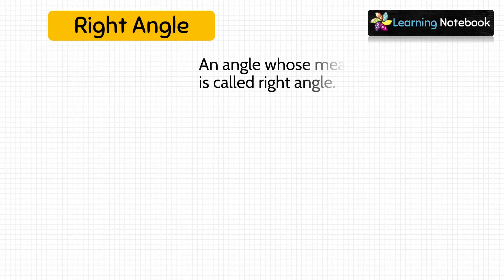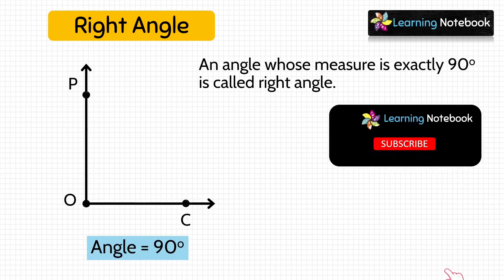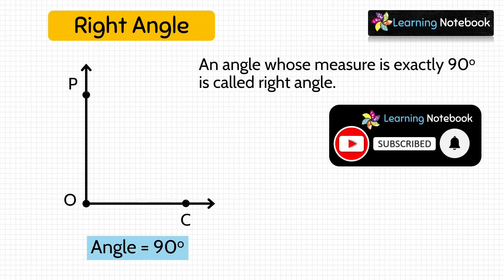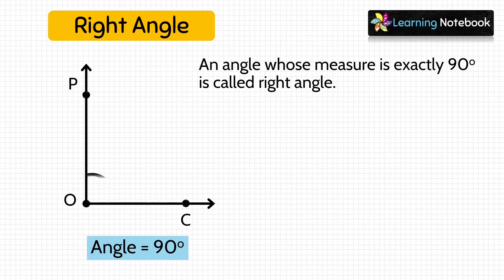Next type of angle is right angle. An angle whose measure is exactly 90 degrees is called a right angle. Students, do remember that there is a special symbol to denote a right angle. We cannot use the regular arc symbol here; instead we use the square corner symbol to denote the right angle.